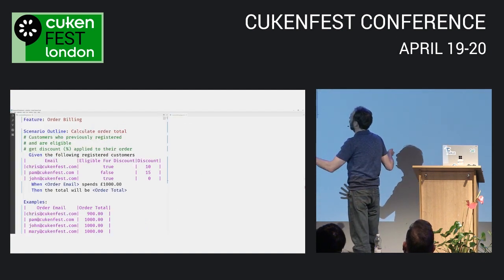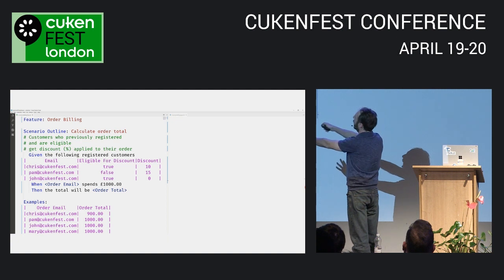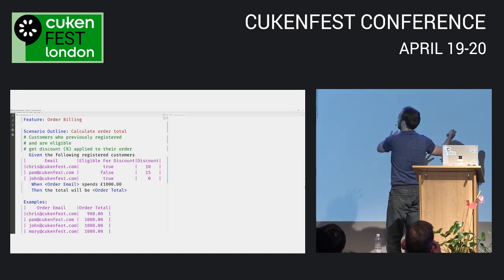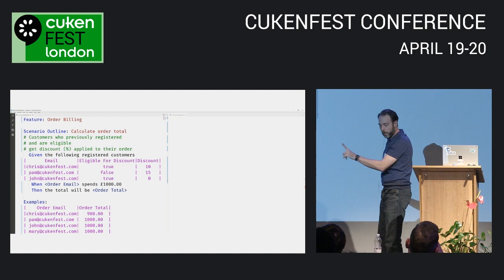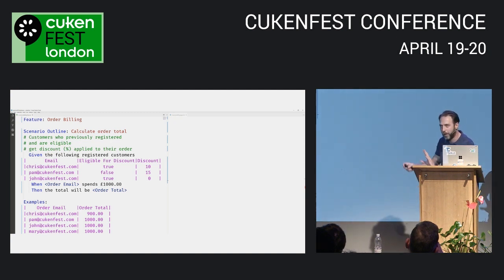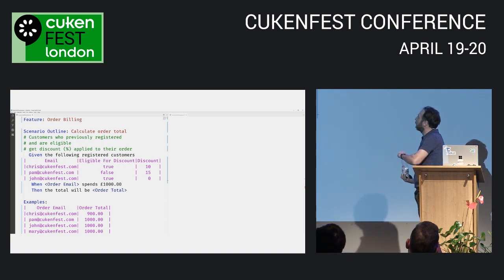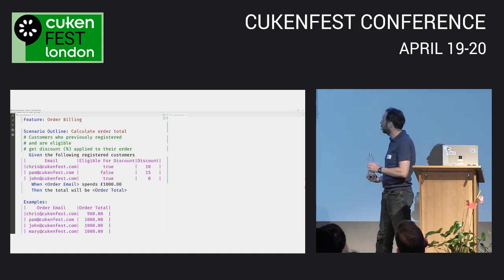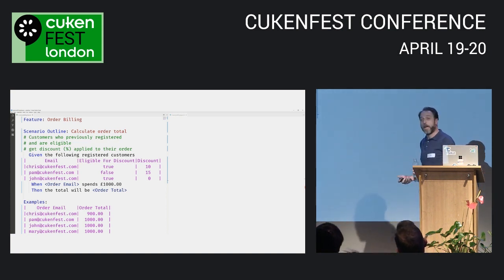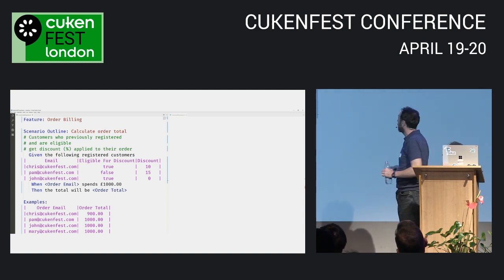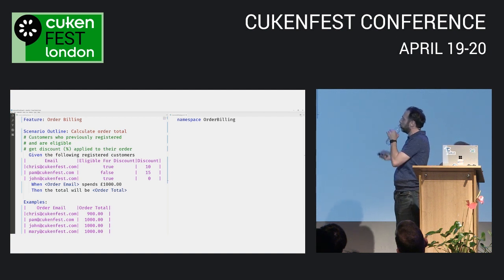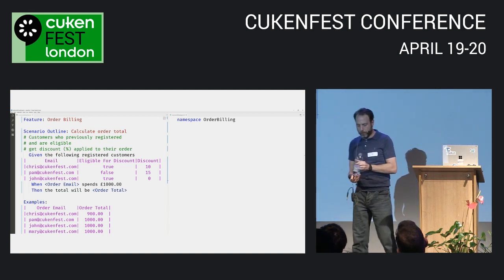I'm going to split my screen — keep the feature on the left and build up the type system on the right. No baffling F# code, I promise. Starting at the top: what is a feature? A feature doesn't do anything itself, it's just a place where you put scenarios with some commonality. The equivalent in F# is a namespace, so we'll use the same terms.